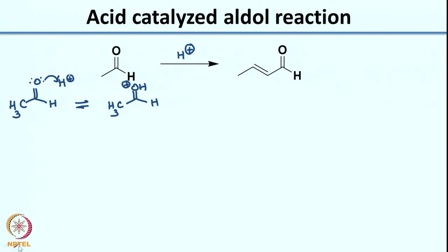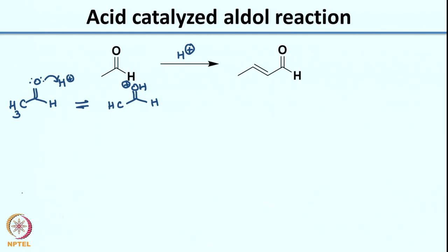What we do next is write the methyl as CH₂H because now we have an acidic proton here, and this can be grabbed — but remember the medium is acidic, so you will not have OH⁻. It would be grabbed by water, and what I would be generating would be an enol.